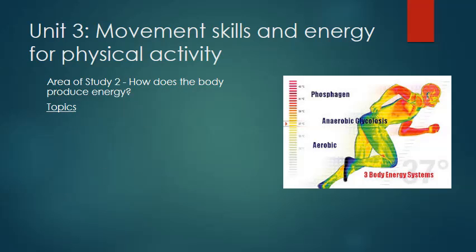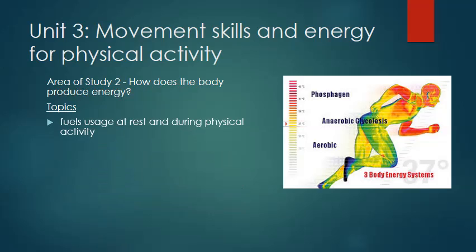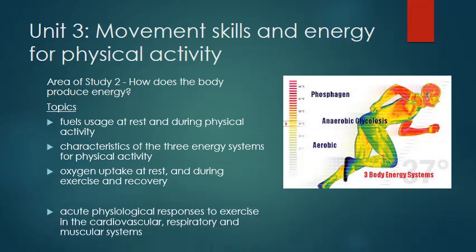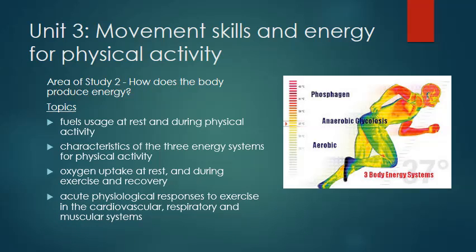The second topic in unit three is how the body produces and uses energy. We look at different types of fuels that are used at rest and during physical activity, the characteristics of the three energy systems, how the body uptakes and uses oxygen, and the acute responses to exercise in the different body systems.